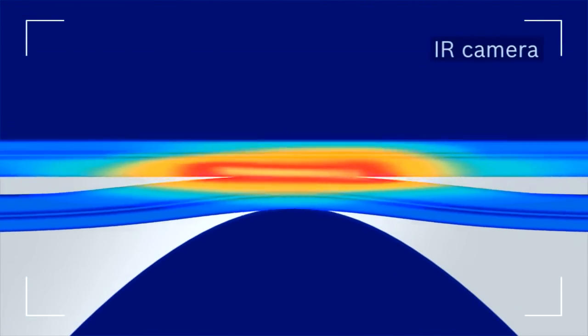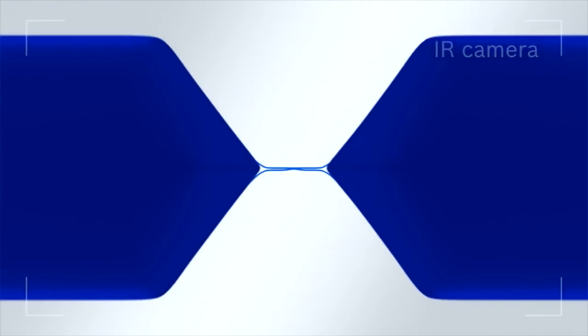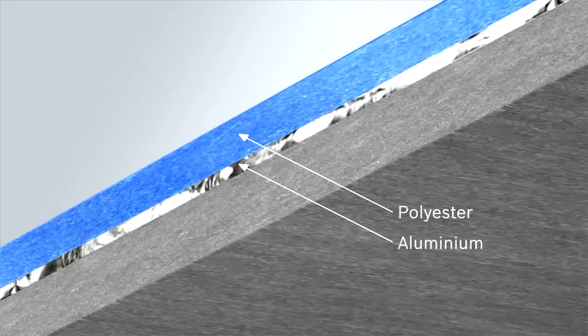The foils are normally composed of three layers: the outside is a mechanically stable polyester layer, the middle layer is comprised of aluminum, and the inside layer is made of a sealable material, for example polyethylene.